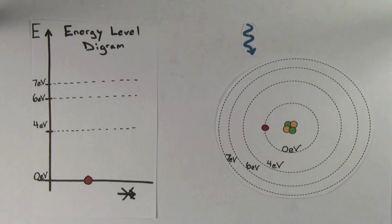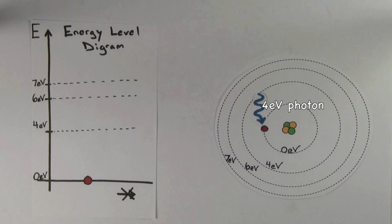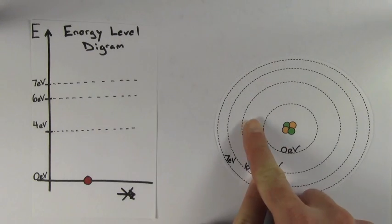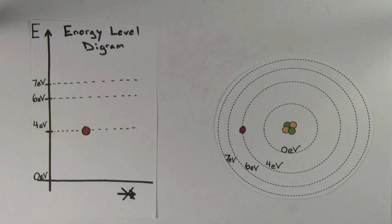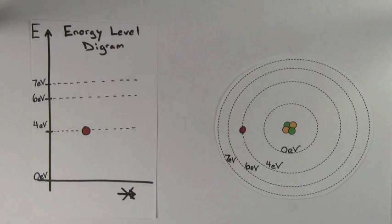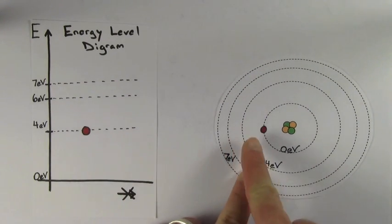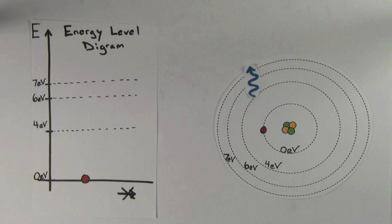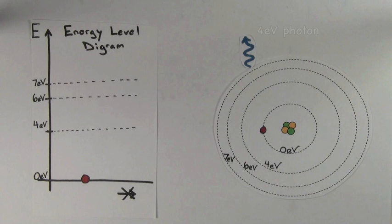The electron in the ground state needs 4 eV to jump to the next energy level. So if a photon with an energy of 4 eV came in and struck the electron, the electron would absorb the energy of the photon, causing the photon to disappear, and that electron would jump up to the next energy level — called the first excited state. Once the electron is at the higher energy level, it won't stay there long. Electrons will fall towards the lowest energy level they can, so our electron will fall back down to the ground state, give up 4 eV of energy, and emit a 4 eV photon.